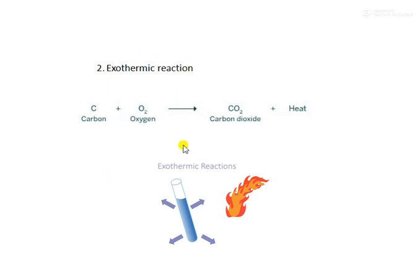In an exothermic reaction, heat energy is liberated and it is called an exothermic reaction. For example, when carbon burns in the presence of oxygen, carbon dioxide is formed and heat energy is also released. The reaction is: C + O₂ → CO₂ + heat. Other examples of exothermic reactions are respiration, burning of fossil fuels, and burning of petrol.